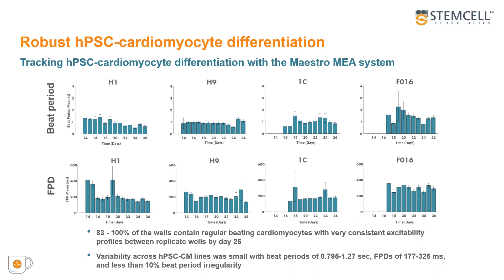83 to 100% of the wells contained regular beating cardiomyocytes with very consistent excitability profiles up until day 25. Variability across those lines was small with respect to the beat period and the field potential duration, and we saw less than 10% beat period irregularity across the four HPSC lines.